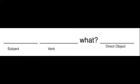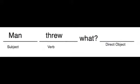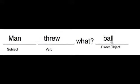We're going to fill in these blanks: 'man threw.' To find the direct object, we ask 'what.' So what did the man throw? He threw the ball, and that's our direct object.